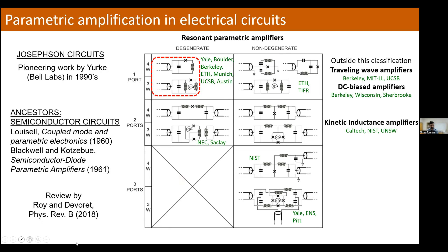The other feature of any paramp is that you need a nonlinear resonator — some kind of nonlinearity. In this example the fact that the restoring force goes as sine theta and not just theta is crucial. The world of Josephson paramps in electrical circuits is quite established. There are now review articles that characterize and classify the various types of JPAs that many groups have built. This classification of resonant parametric amplifiers can be organized by number of ports, whether the modes are degenerate or non-degenerate in frequency, and the type of nonlinear interaction — what we call four-wave or three-wave mixing.